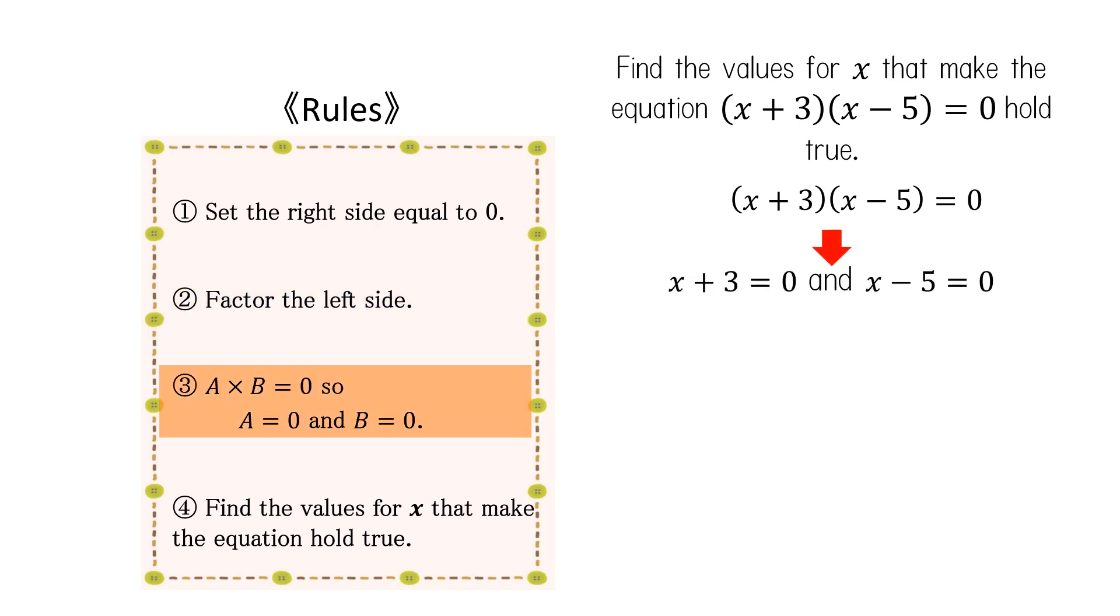In this quadratic equation, (x + 3)(x - 5) = 0. In this case, if a times b equals 0, we can use the idea that a equals 0 or b equals 0 to solve the problem.